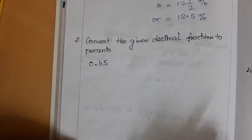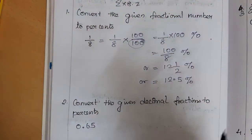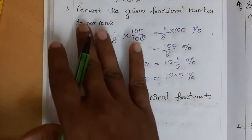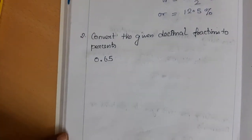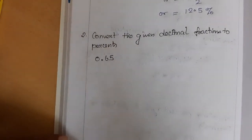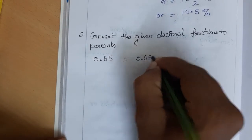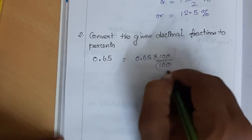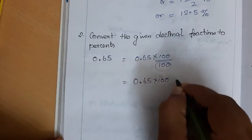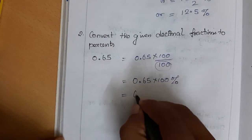Next exercise: convert the given decimal 0.65 to percentage. The same method — multiply 0.65 by 100 and divide by 100. This 100 will become the percent symbol. 0.65 into 100 equals 65, so our answer is 65 percent.